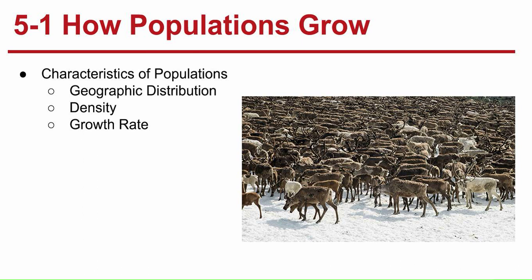Next is density — population density — which is the number of individuals per unit area. This depends on the species and the ecosystem. With a smaller ecosystem, you will have greater density than a larger ecosystem, and with larger animals, you will have smaller population density than with smaller animals.